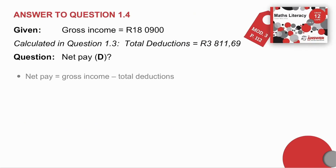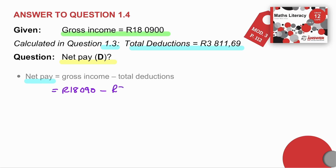Question 1.4: we are given the gross income. We have calculated in 1.3 his total deductions, and now they're asking for his net pay, which is D. Net pay equals gross income minus total deductions: R18,090 minus total deductions of R3,811.69, which gives a net pay of R14,278.31. That is D.